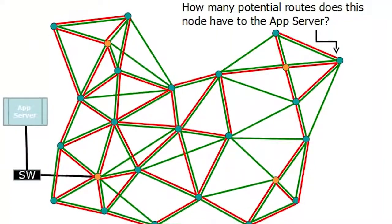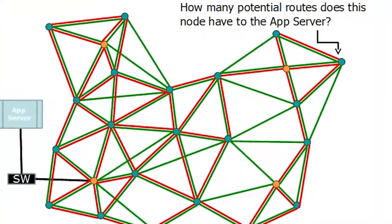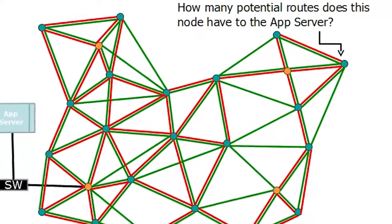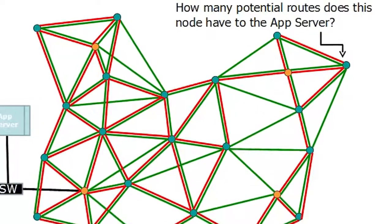On the kinetic mesh, however, the same node has any number of paths back to the application server. In fact, too many to count.